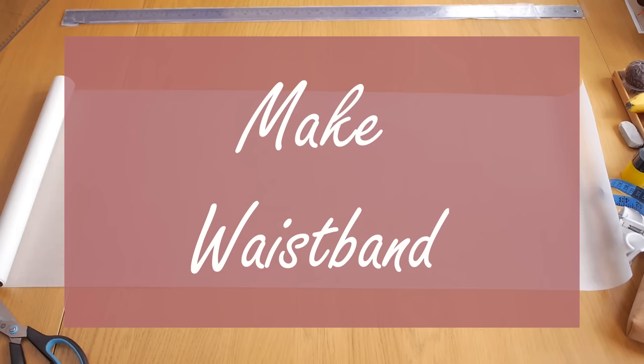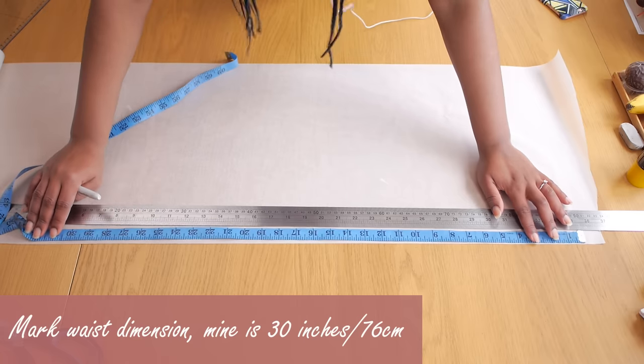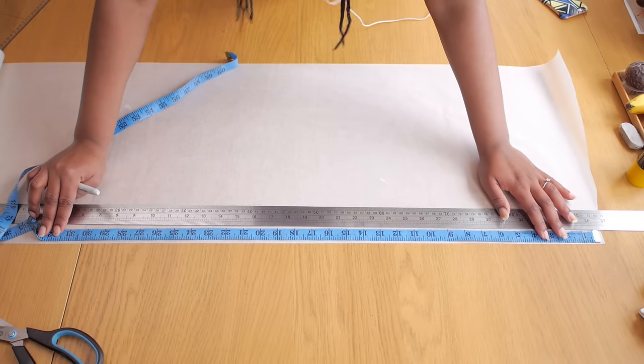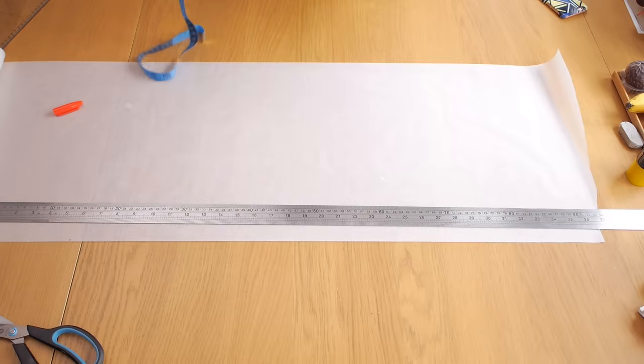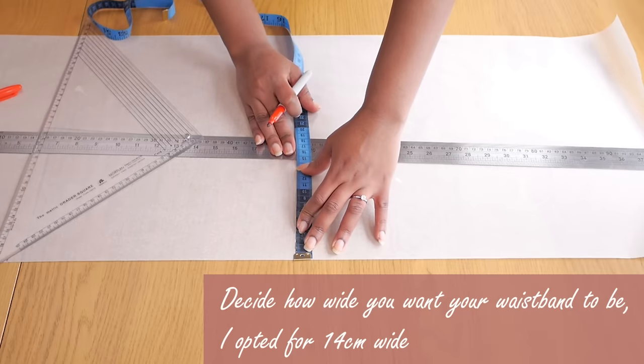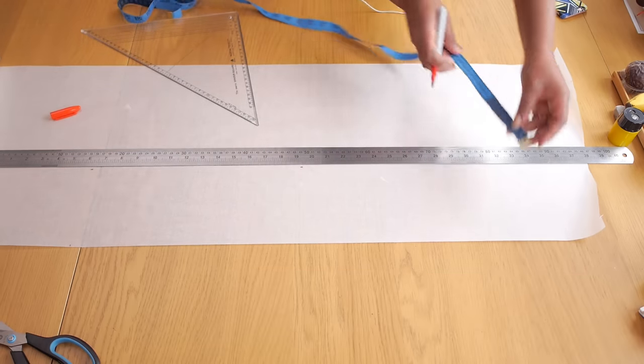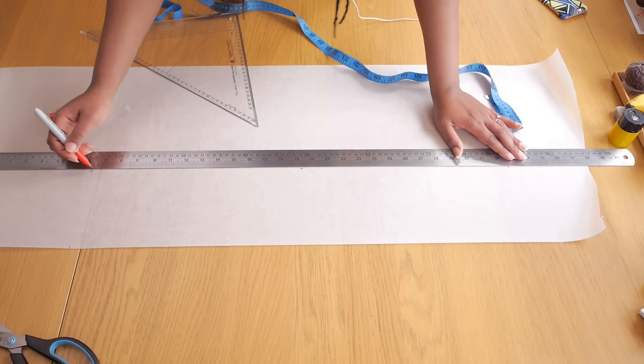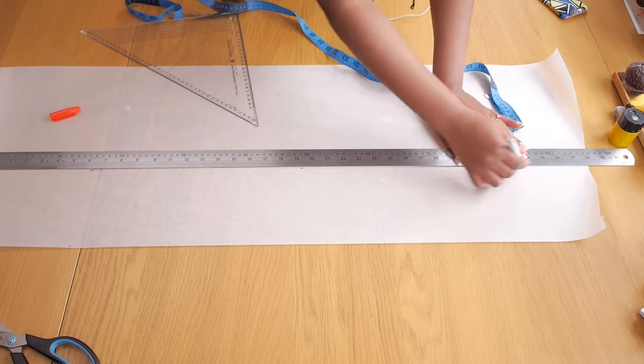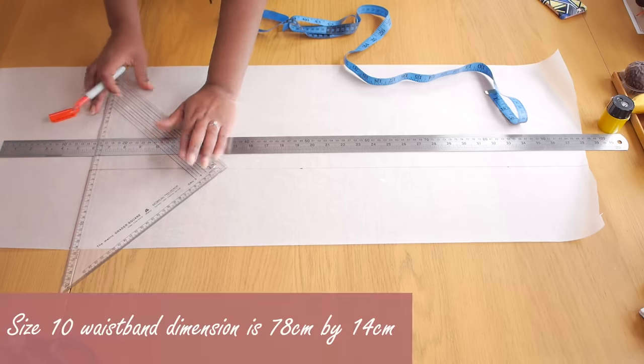If you want to create a waistband, it's relatively straightforward, and I'm going to show you how to make a simple waistband. All you need to do is create a rectangle that is the dimension of your waist by the width of whatever size you want. I decided to go with 31 inches because I added an additional inch in case I want to fix a zip on the center back, and I made it 14 cm wide. I'm going to cut that one piece and then fold it in half before attaching it to the waist.